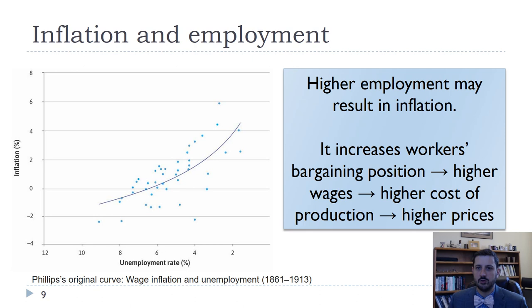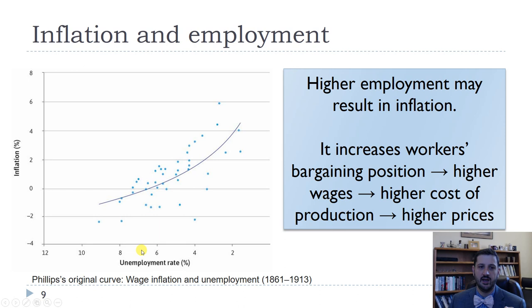Back in the 1950s, there was an economist named A.W. Phillips, and he looked at data going back to the 19th century in the U.K., and he found that there was an inverse relationship between unemployment and inflation. Note that in this textbook, when they're plotting the unemployment rate, in order to fit it into our employment model, they plot it backwards so that zero unemployment is on the right-hand side and higher unemployment is on the left-hand side. So we get an upward sloping line instead of a downward sloping line.